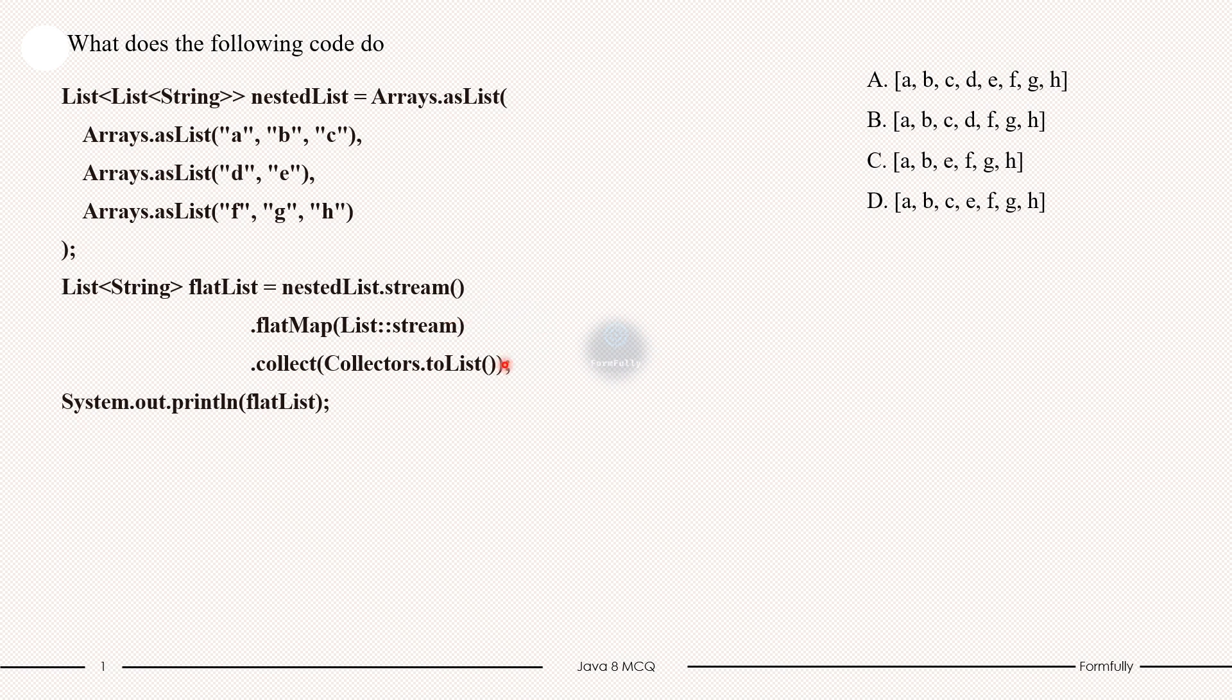Then the flatMap method is key here. It takes each sublist and flattens it, that means turning the stream of lists into a stream of individual strings by calling list.stream(). Each sublist is converted into its own stream and flatMap merges all of those streams into one continuous stream of strings.